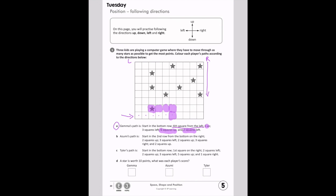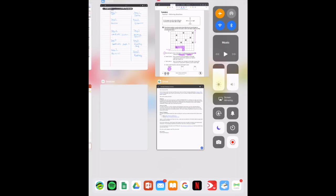And then you're going to follow the rest of the directions. Six squares up, and then two squares left, and then how many stars did Gemma's path pass through? I'm going to write that in this box down here. If you have any questions, you can ask me on Seesaw.